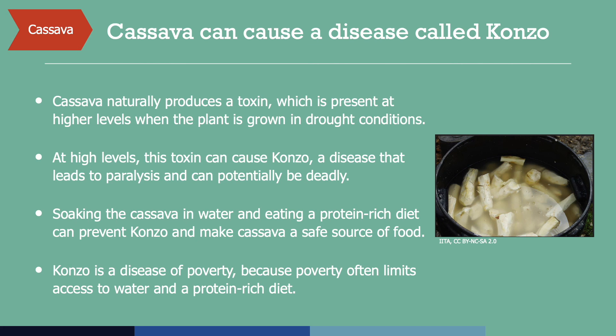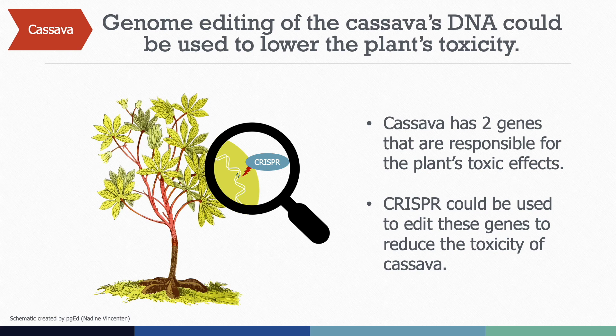So how might genome editing help improve health and reduce disease for the people who rely on cassava? There are two genes that are responsible for the toxicity of cassava. Scientists have proposed using CRISPR to make specific changes to these genes with the goal of reducing the plant's toxicity. One major advantage of using CRISPR is that it is much faster than traditional breeding methods. Furthermore, CRISPR technologies can be applied to local varieties of the cassava plant, thus maintaining characteristics of the plant that make it well suited to the region where it will be grown.